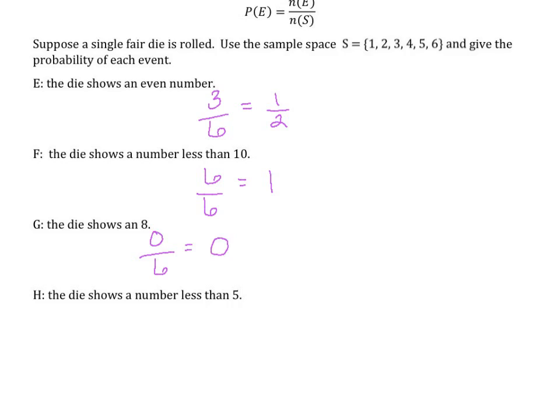How about when the die shows a number less than five? So we have six total outcomes. Numbers that are less than five, we have one, two, three, four. So there are four numbers less than five. So our probability is two thirds.